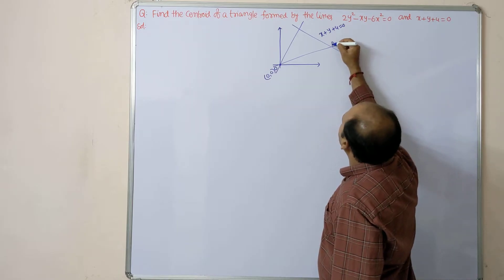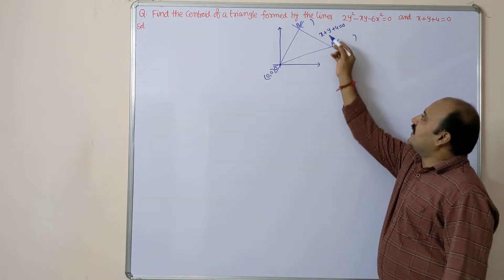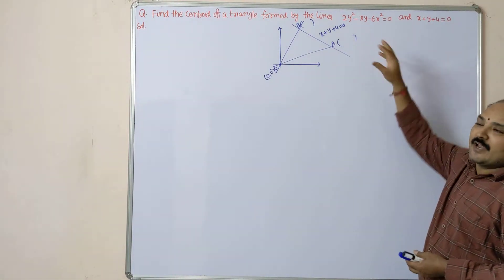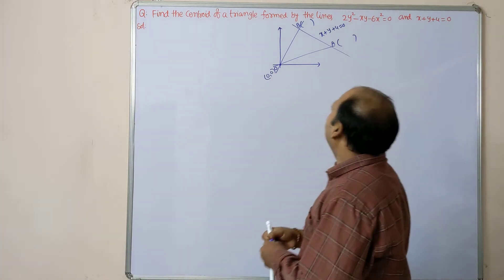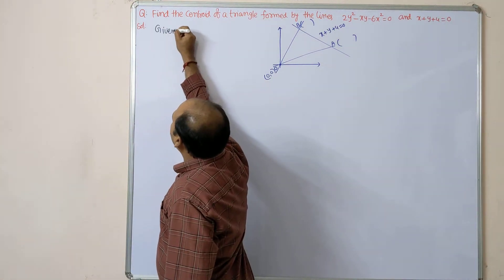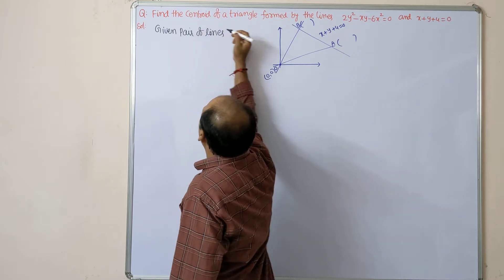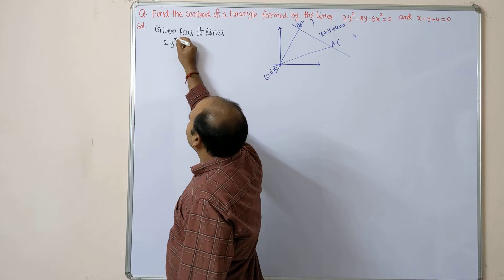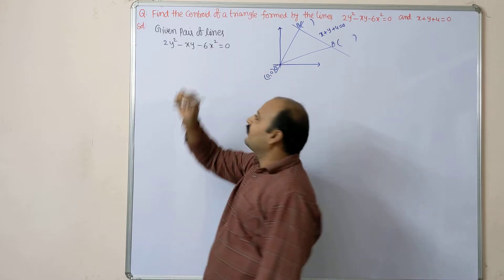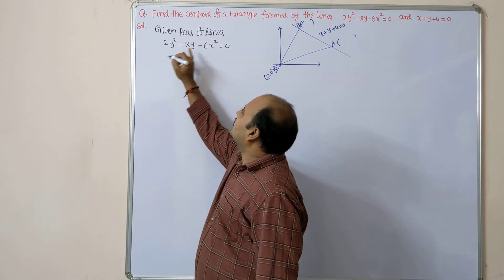We need to get point A and point B, and then find the centroid of the triangle. Step by step I will explain this. First, the given pair of lines: 2y² - xy - 6x² = 0. We are going to split this into two lines. Looking at -6x² + 2y², 2 × (-6) = -12, so the middle term splits in terms of 4 and -3.